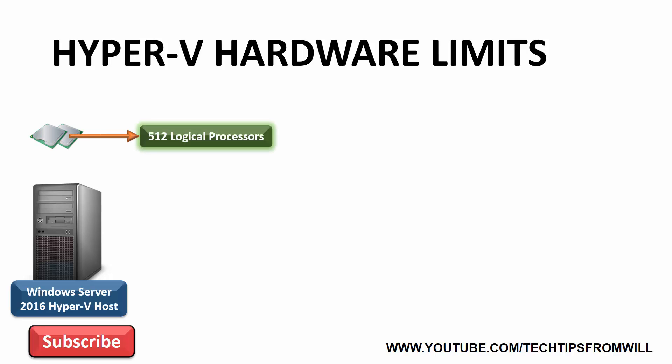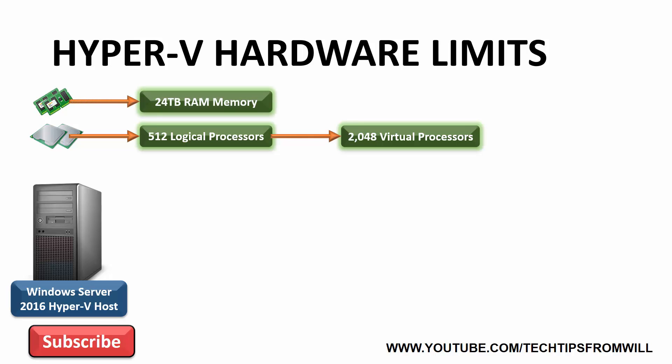Each physical Windows Server 2016 host server running Hyper-V can support up to 512 logical processors, increased from 320 logical processors in Windows Server 2012 R2. Furthermore, each Windows Server 2016 Hyper-V server can support up to 2,048 virtual processors, which can be allocated out to virtual machines. In terms of RAM memory, each physical Windows Server 2016 host server can address up to 24 terabytes of RAM, a serious ramp-up from Windows Server 2012 R2's upper limit of 4 terabytes of RAM. As you can see, Windows Server 2016 can scale amazingly well.